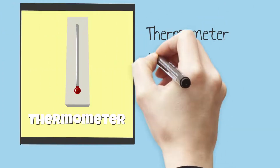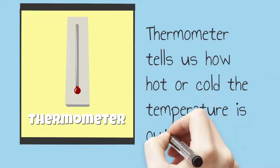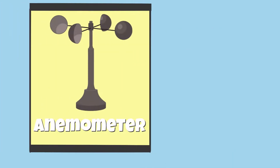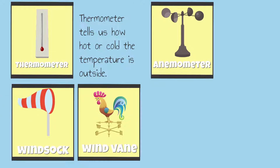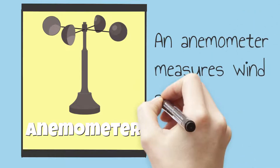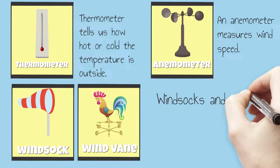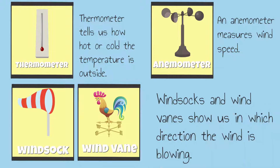A thermometer tells us how hot or cold the temperature is outside. Meteorologists can also use an anemometer and a windsock or wind vane to measure the speed and direction of the wind. An anemometer measures wind speed, and windsocks and wind vanes show us in which direction the wind is blowing.